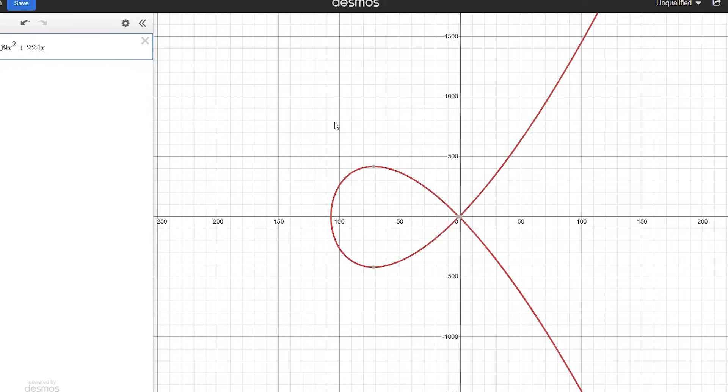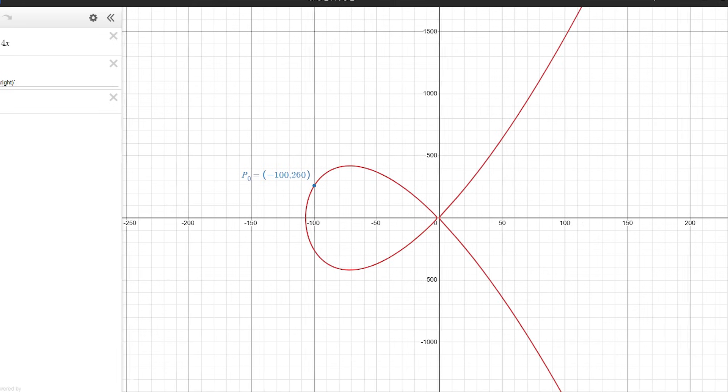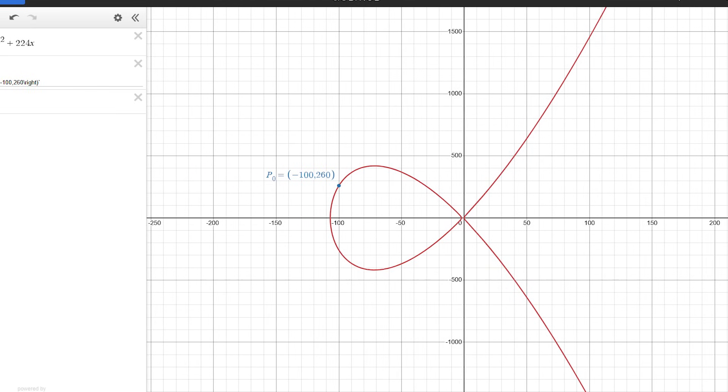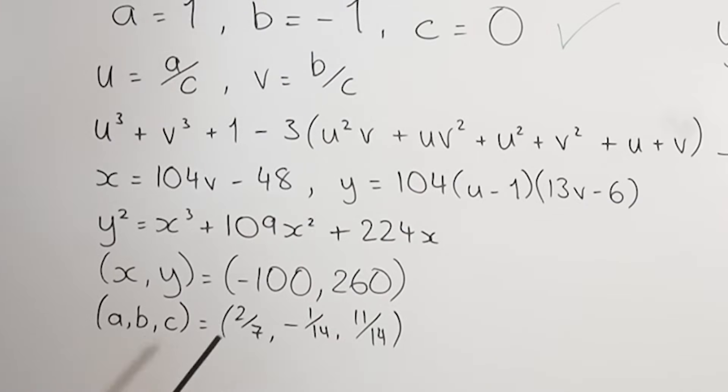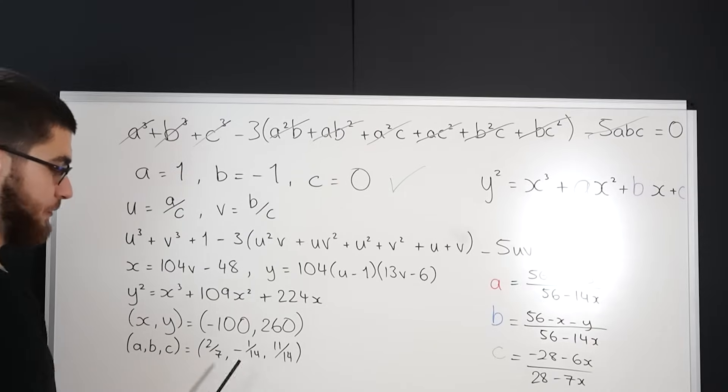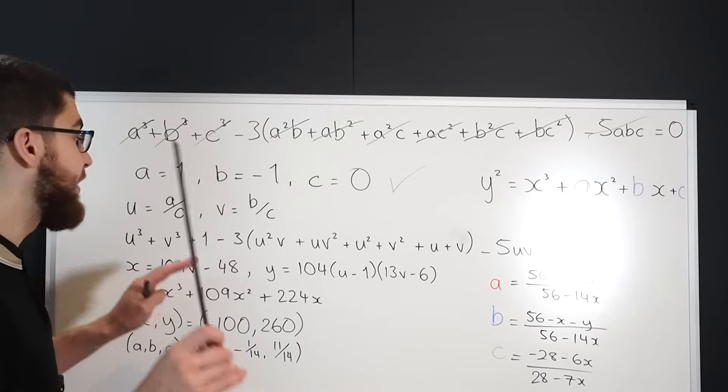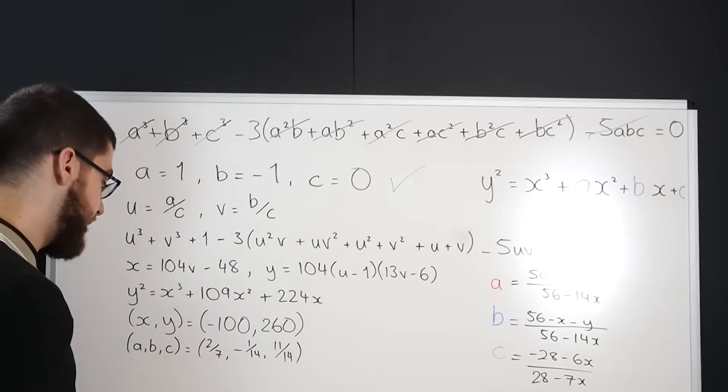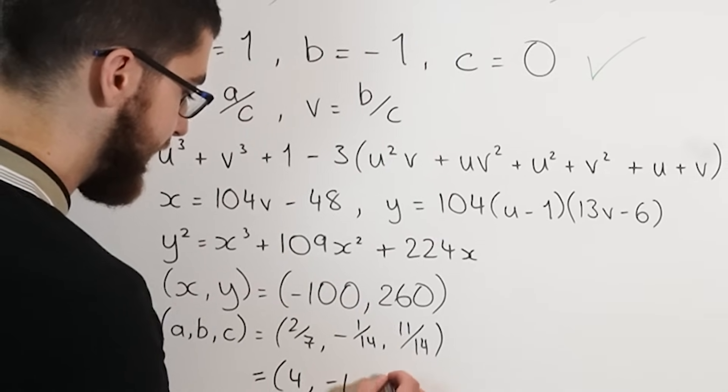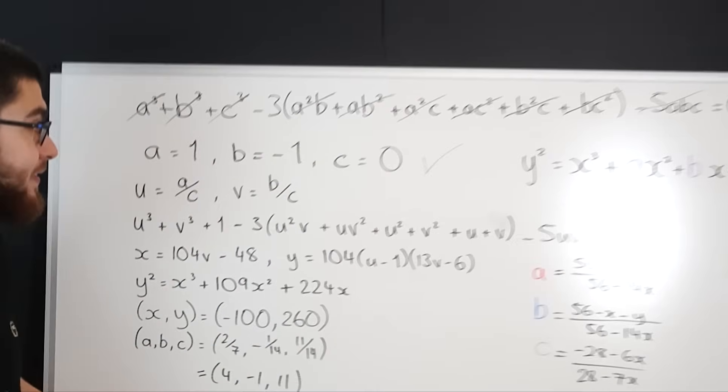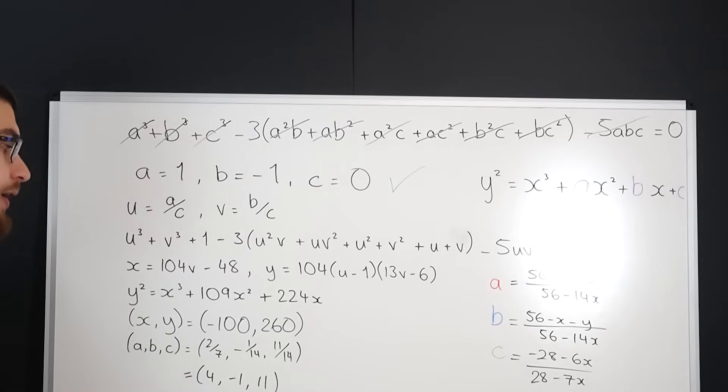Now if we plot our equation in Desmos it looks like this and the first rational point that we'll use is x equals minus 100, y equals 260. And if we plug that into our equation for a, b and c then we get a is 2 sevenths, b is minus 1 over 14 and c is 11 over 14 and we can multiply it out by 14 to get rid of our denominator to get a, b and c is equal to 4, minus 1 and 11 which is a solution to our equation but it's not positive so we have to keep going.